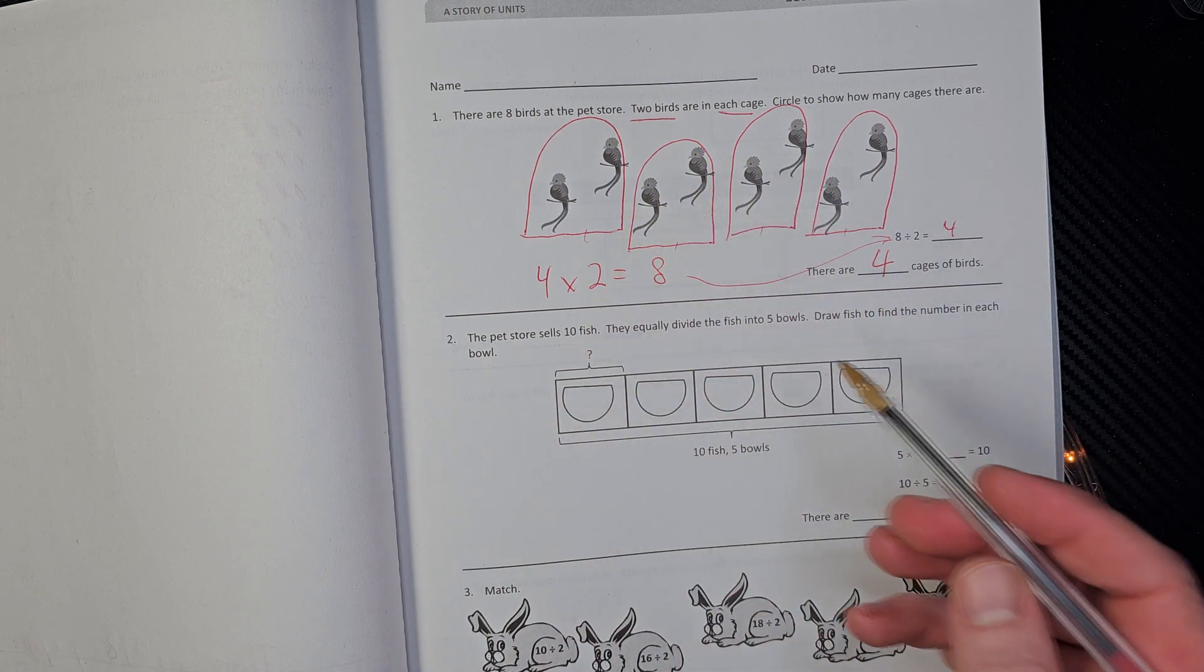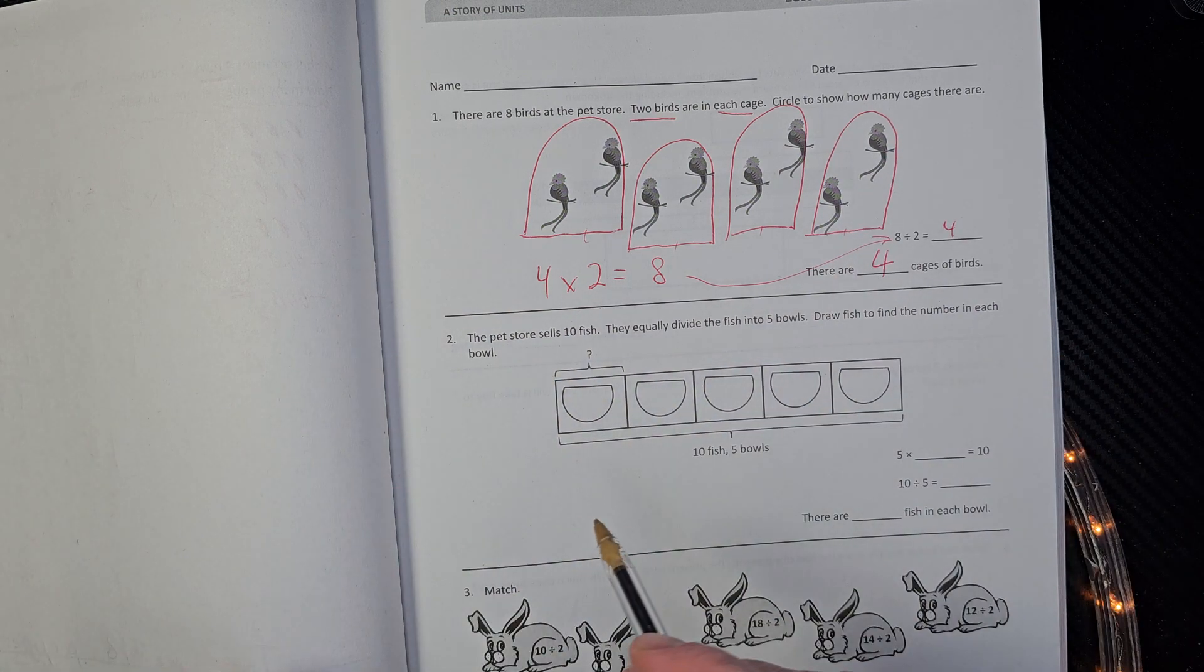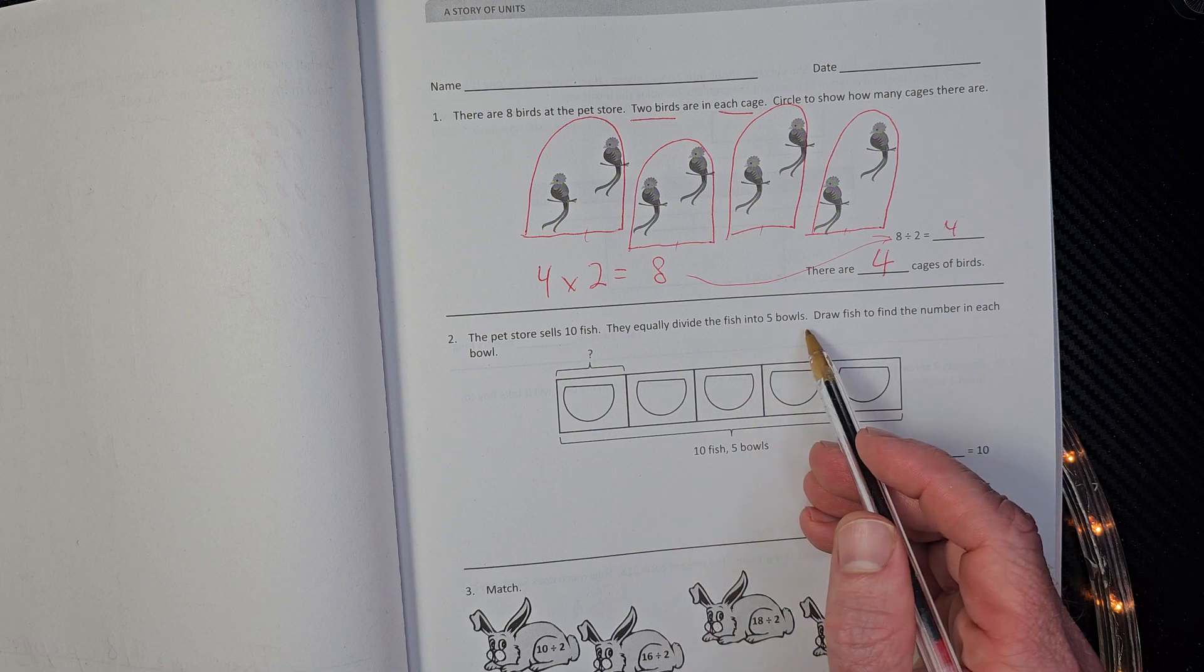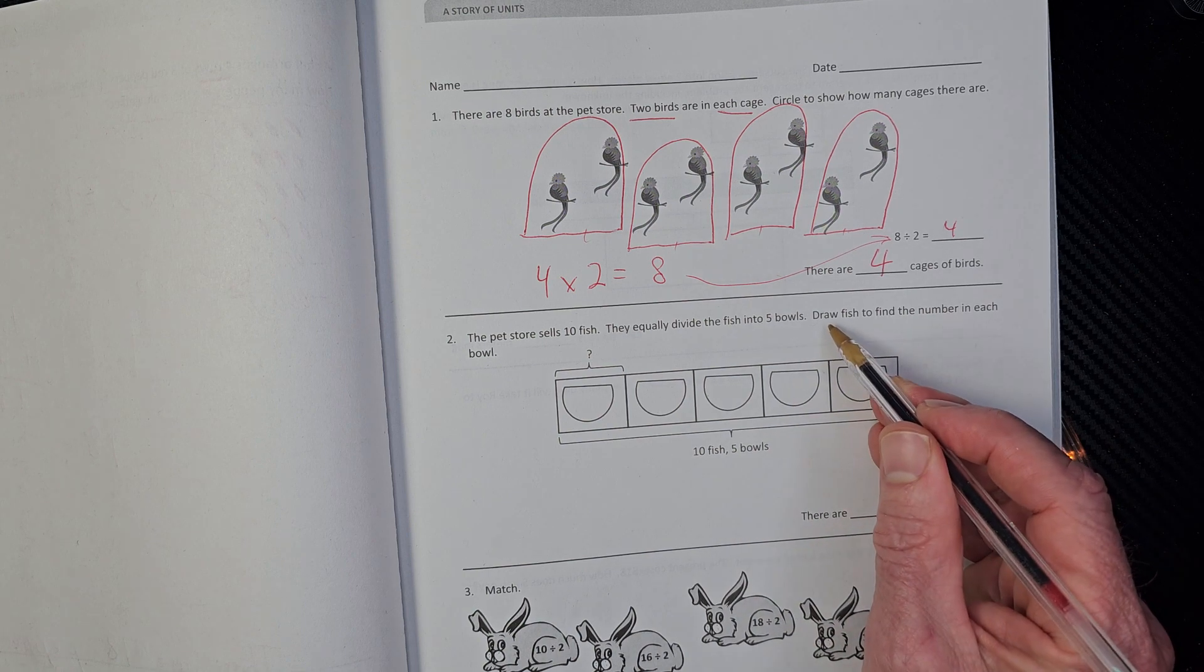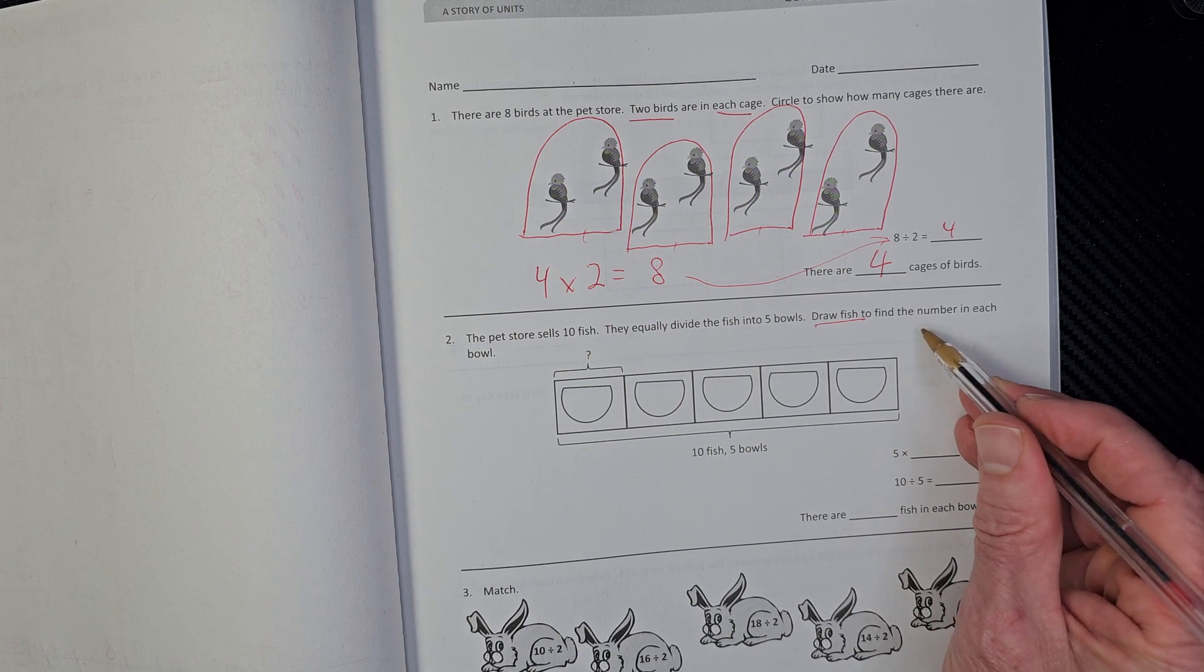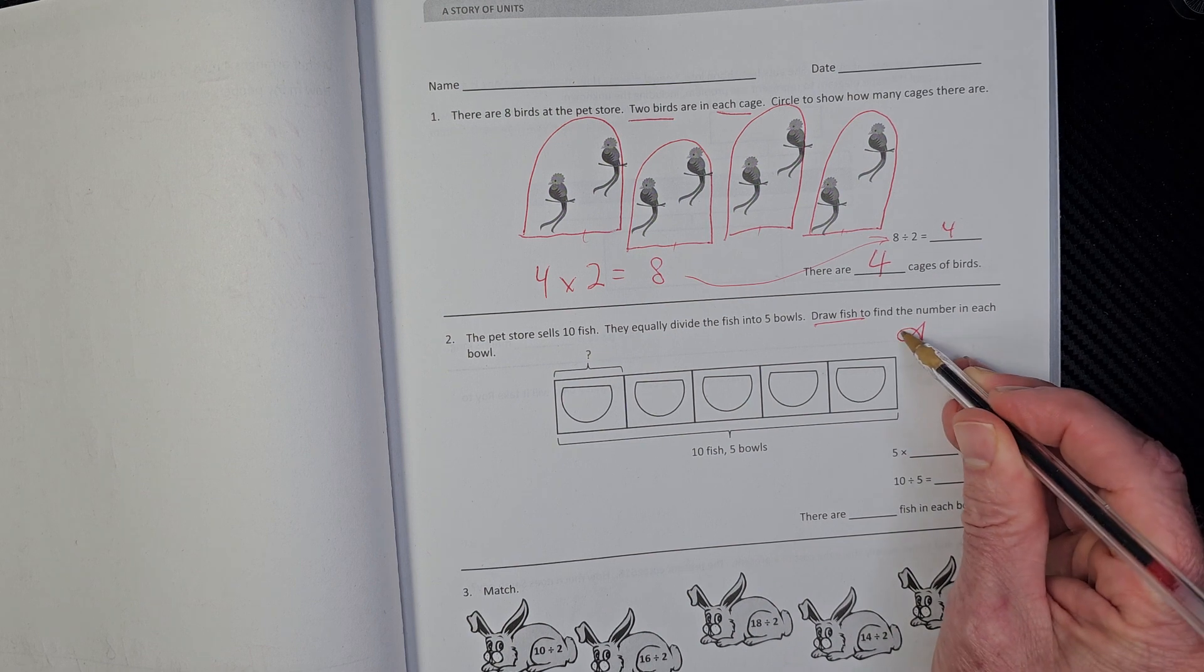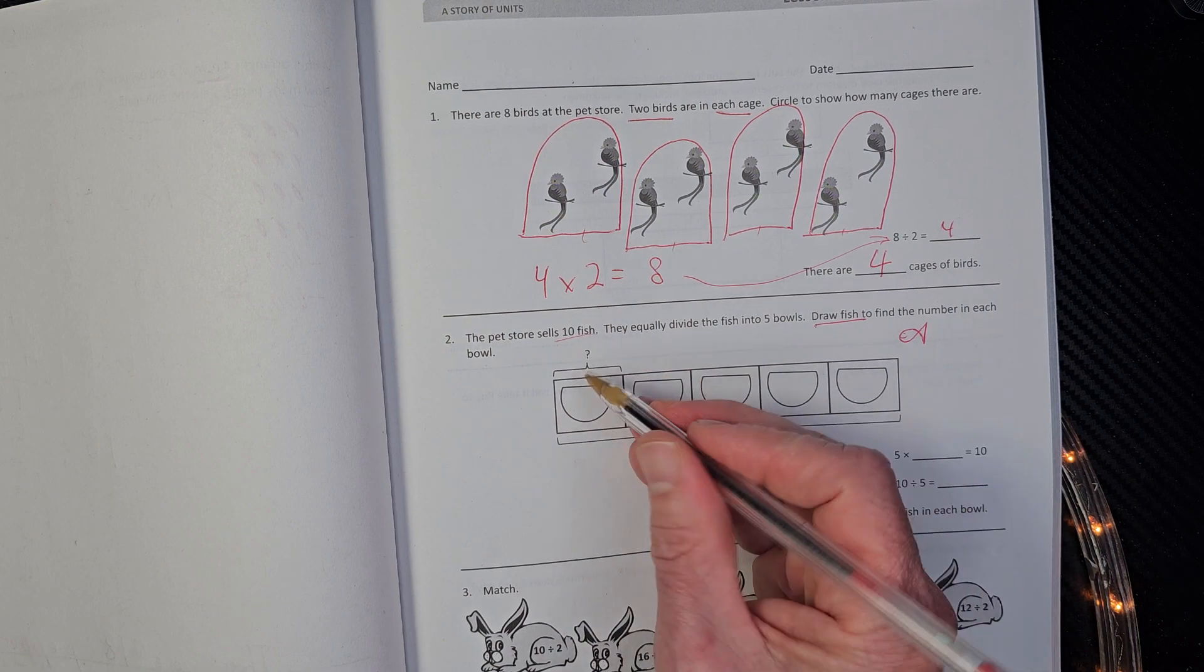The pet store sells ten fish. They equally divide the fish into five bowls. Draw a fish to find the number in each bowl. They're getting specific. They want you to draw a fish. Now, when you draw a fish, do it like an eight. If you can see me, go like this - bring it over like that. It's like a sideways eight. Bring it up here, straight line down, and then connect. And there's your little fishy. So we need to draw a fish. How many fish total? Ten.